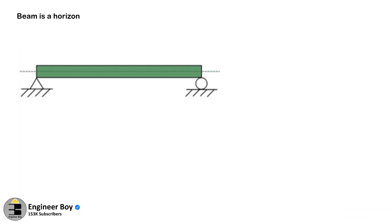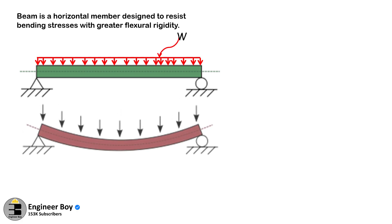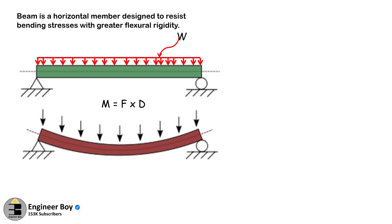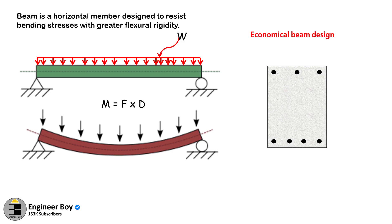Then you must know that a beam is a horizontal member designed to resist bending stresses with greater flexural rigidity. That's why we can say that the most economical beam design is one that provides greater flexural rigidity with a minimal sectional area. And remember, the rigidity is defined as EI.